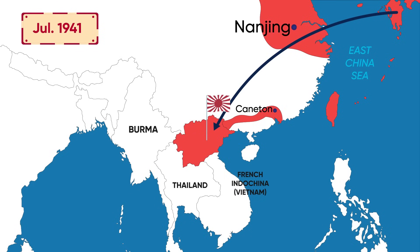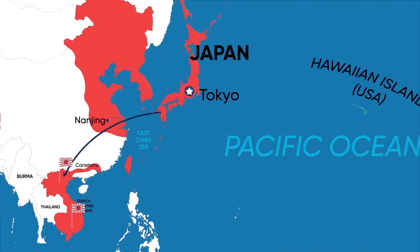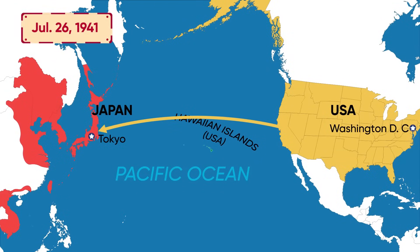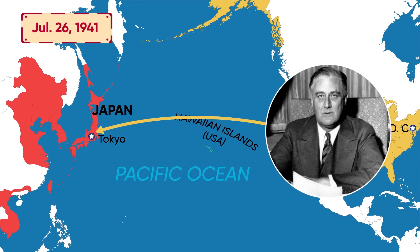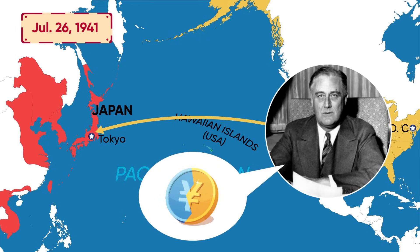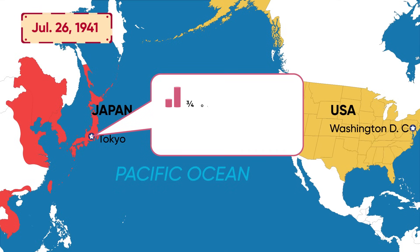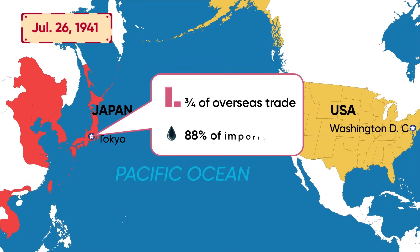Japan extended its control over the whole of French Indochina. In retaliation, President Franklin Roosevelt froze all Japanese assets in America and ended sales of oil to Japan, resulting in Japan losing three-fourths of its overseas trade and 88% of its imported oil.